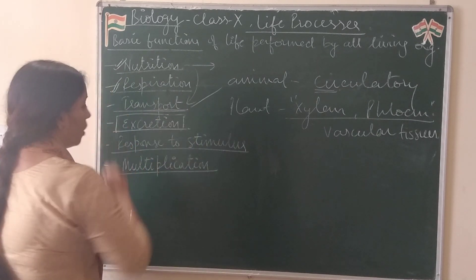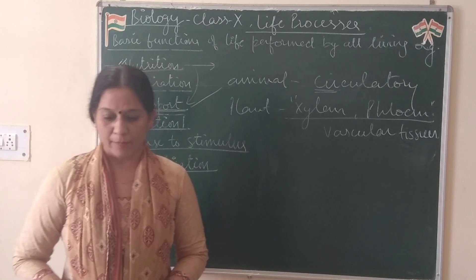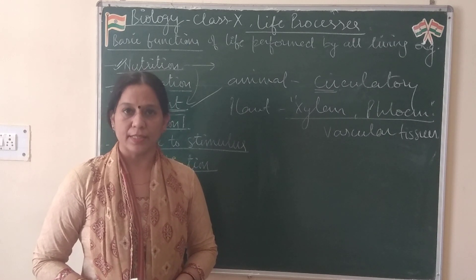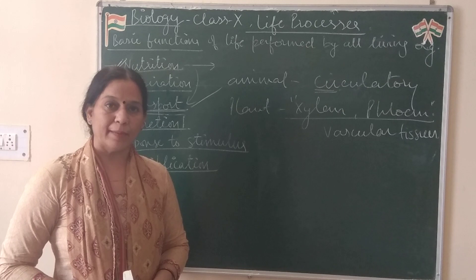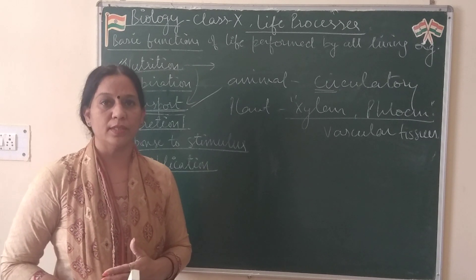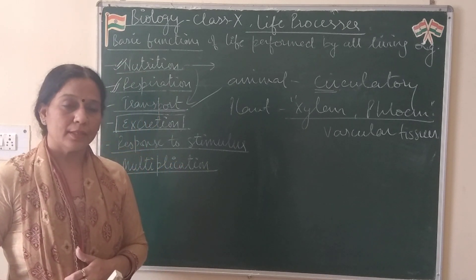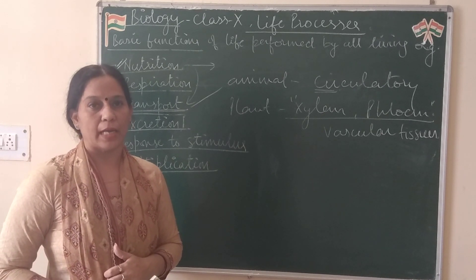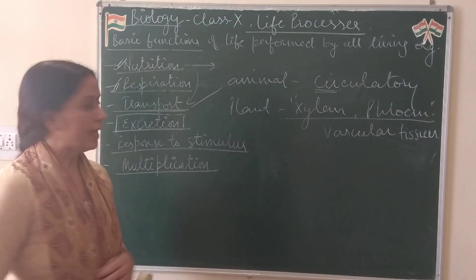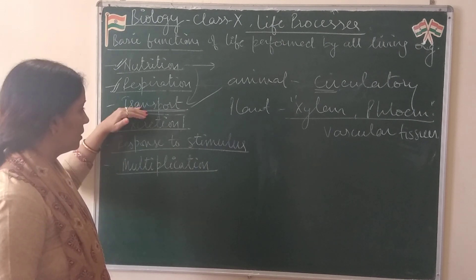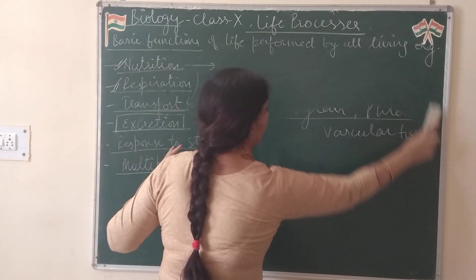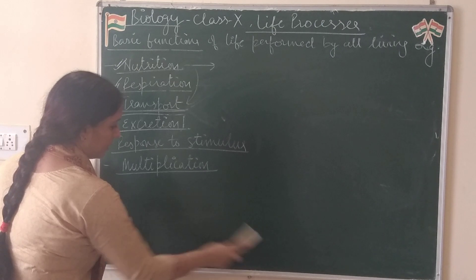Excretion: all living organisms have biochemical reactions in their cells — metabolism — including anabolic reactions like glucose synthesis, and catabolic reactions like the breakdown of glucose to release energy. After these reactions, some waste materials are produced that are undesirable and cannot be retained in the body. Such materials must be removed immediately, which is called excretion. The transport system helps remove these wastes from different cells in animals, while plants store them in different parts of their body.